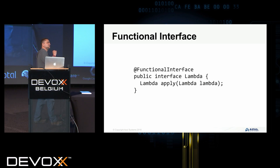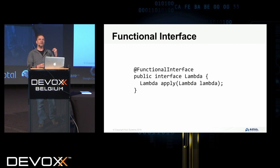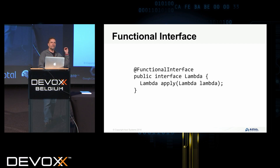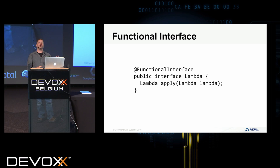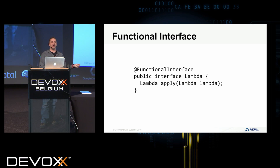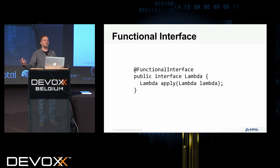The first thing we need is a functional interface, because a Lambda expression represents the implementation of a single abstract method in a functional interface. For this session, we're going to use an interface called Lambda — a very original name. It's going to have a single method called apply, which takes a Lambda as a parameter and returns another Lambda. You can pass Lambdas, get Lambdas back — that's all you can do.